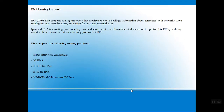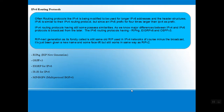Next we have IPv6 routing protocols. A protocol is a set of predefined rules understood by both parties. IPv6 routing protocols are similar to IPv4 but modified to support the larger IPv6 address space. IPv6 routing protocols include RIPng, EIGRP for IPv6, OSPFv3, IS-IS, and MP-BGP4.